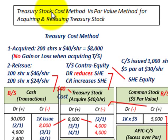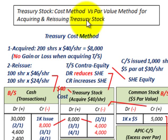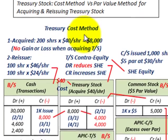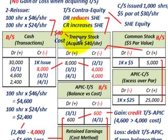What we're going to be looking at here is treasury stock, and we're going to be comparing the cost method versus the par value method for acquiring and reissuing treasury stock. The best way is to go through an example and look at each of these. We're going to start out with the treasury stock cost method, setting up a treasury stock account and an additional paid-in capital account for our treasury stock.